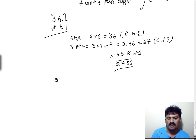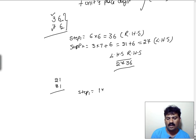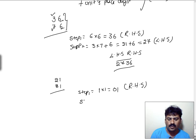Suppose I have 21 and 81. If you look into this multiplication, the units place digit is the same, and the tens place digit sum is 10 — 8 plus 2 is 10. In step 1: 1 into 1 equals 01, which is the RHS part. In step 2: 2 into 8 plus 1 equals 16 plus 1, which is 17.